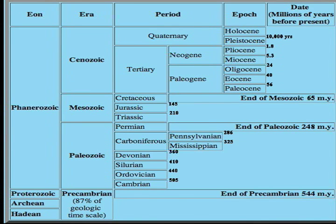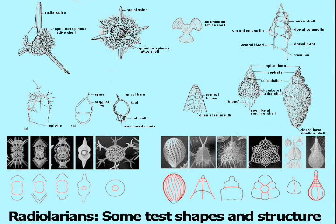Their skeleton, called a test, is commonly a complex structure of solid rods, bars, spines, and needles of hydrated silicon dioxide — opal — a mineral rather strongly resistant to erosion, so easily fossilized, but subject to dissolution under certain conditions.